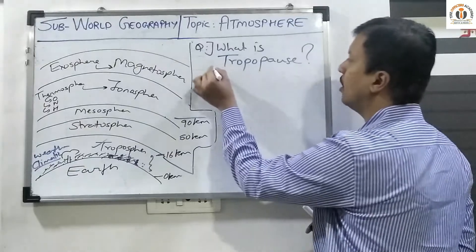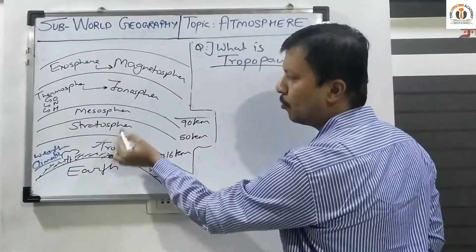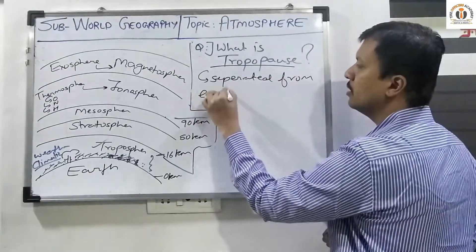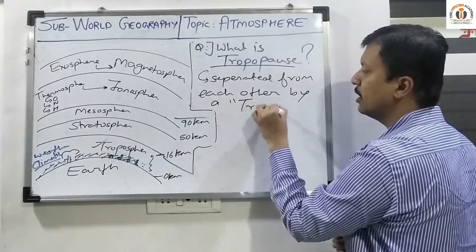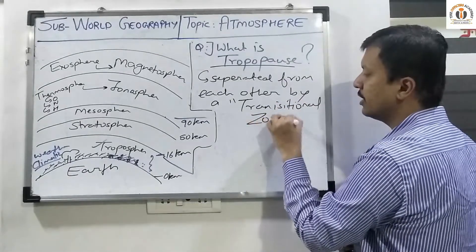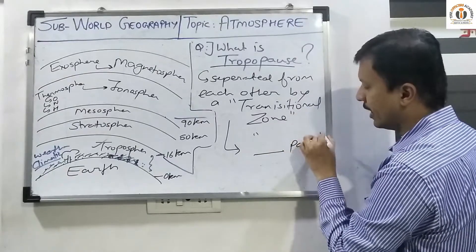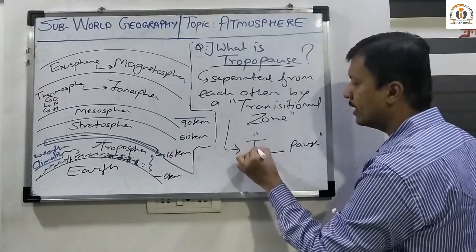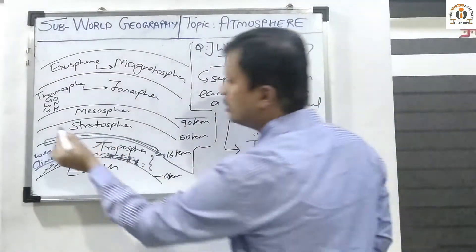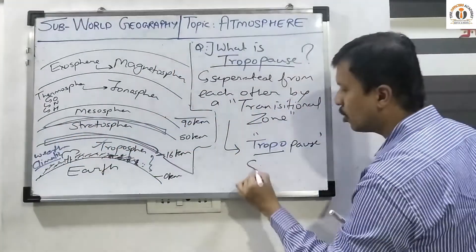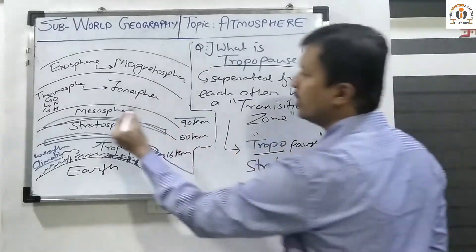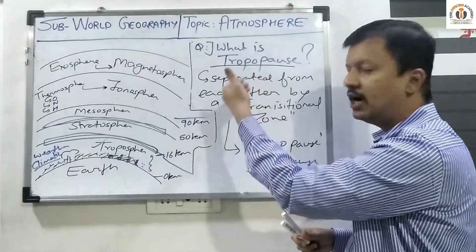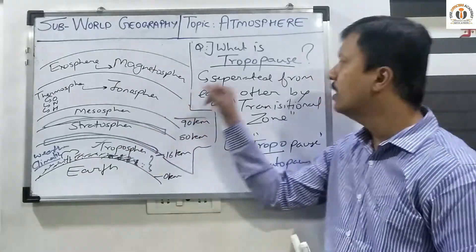Now let us understand the term tropopause. Each layer — troposphere, stratosphere, etc. — is separated from the other by a transitional zone, termed as a pause. The transitional zone between troposphere and stratosphere is called the tropopause. The boundary region between stratosphere and mesosphere is called the stratopause, and the boundary between mesosphere and the next layer is called the mesopause.